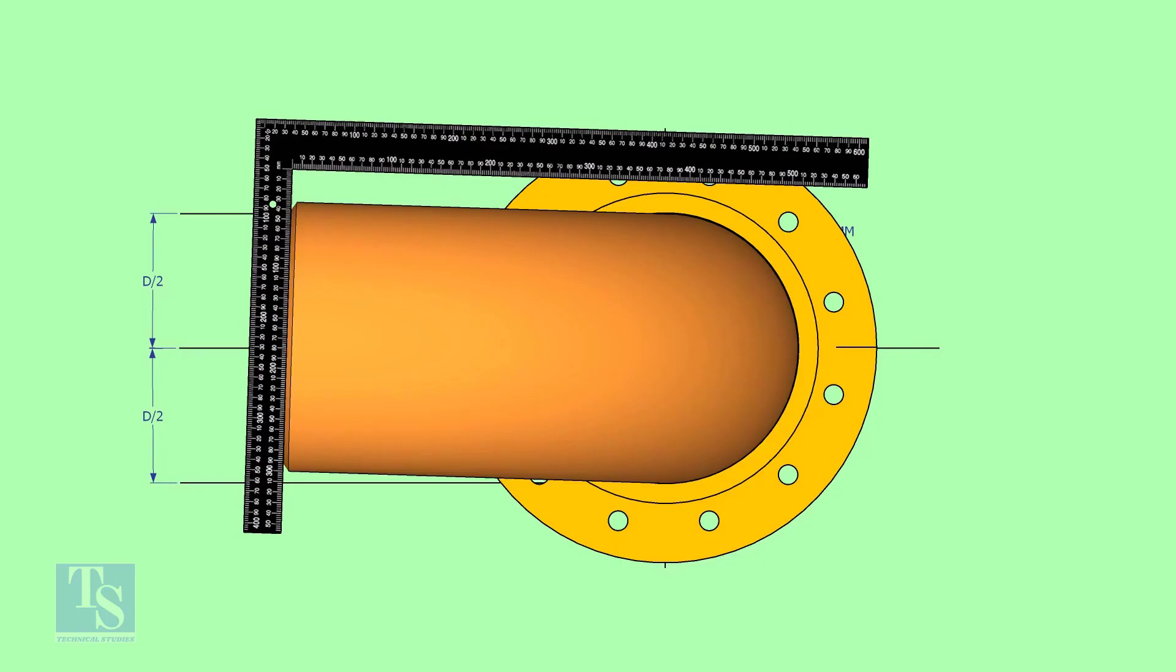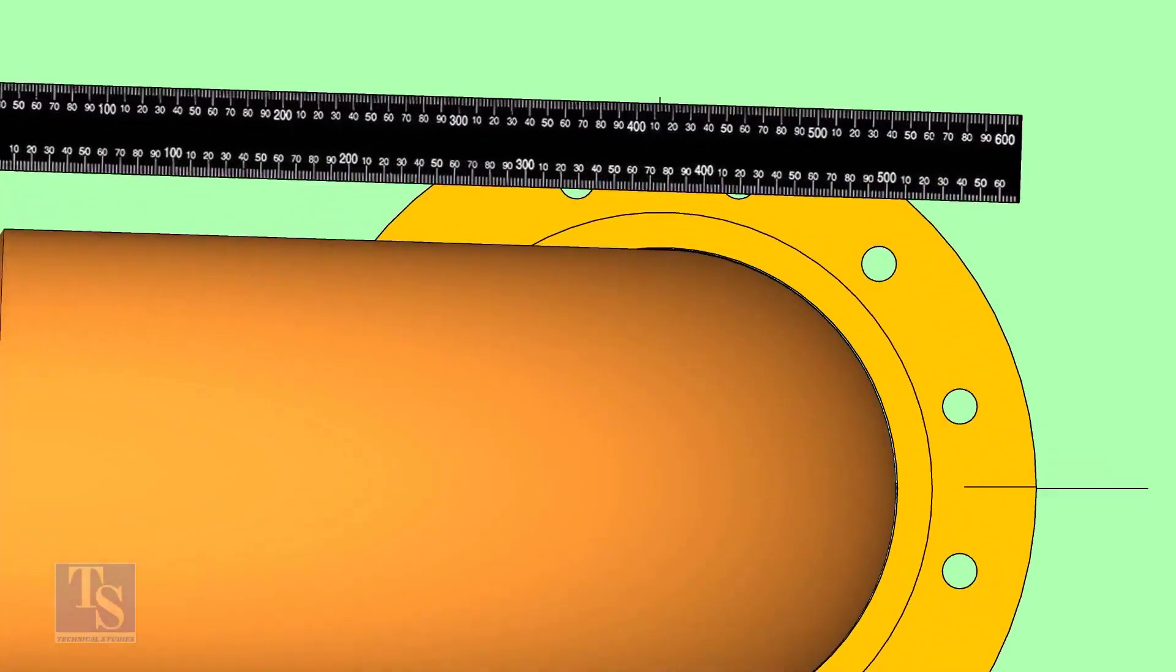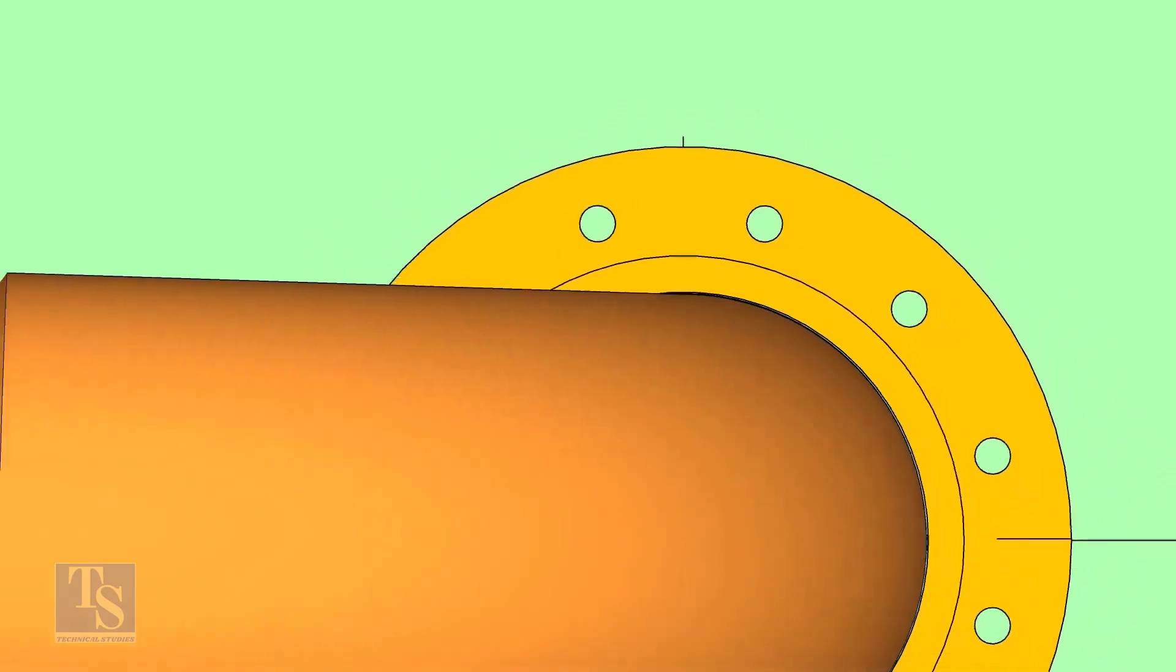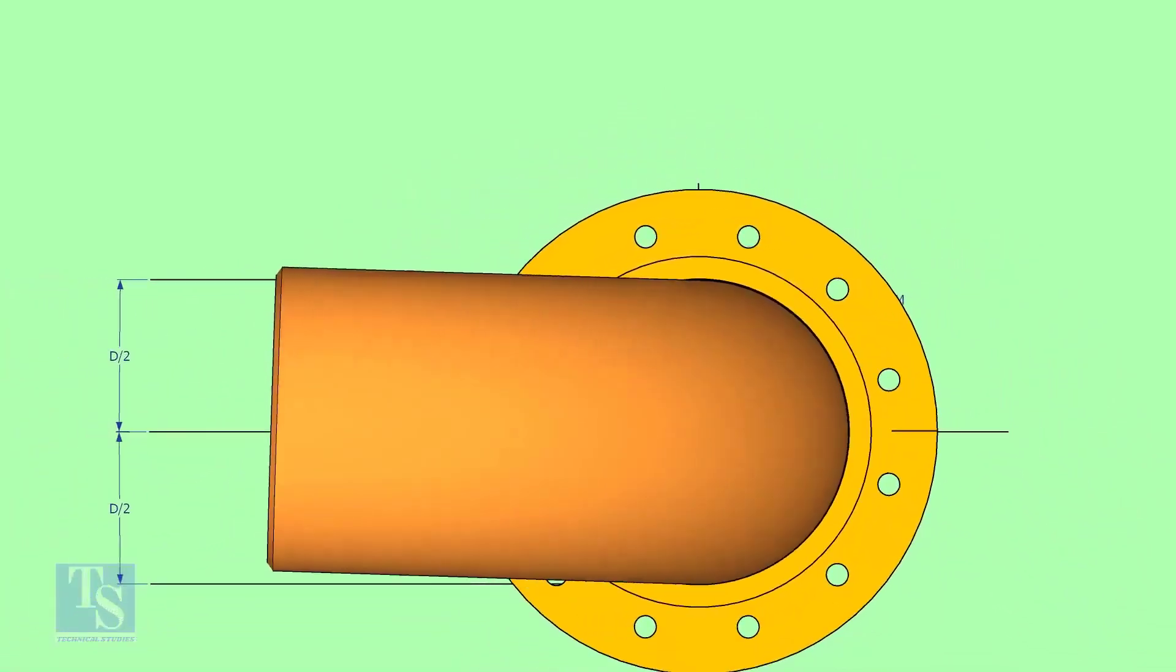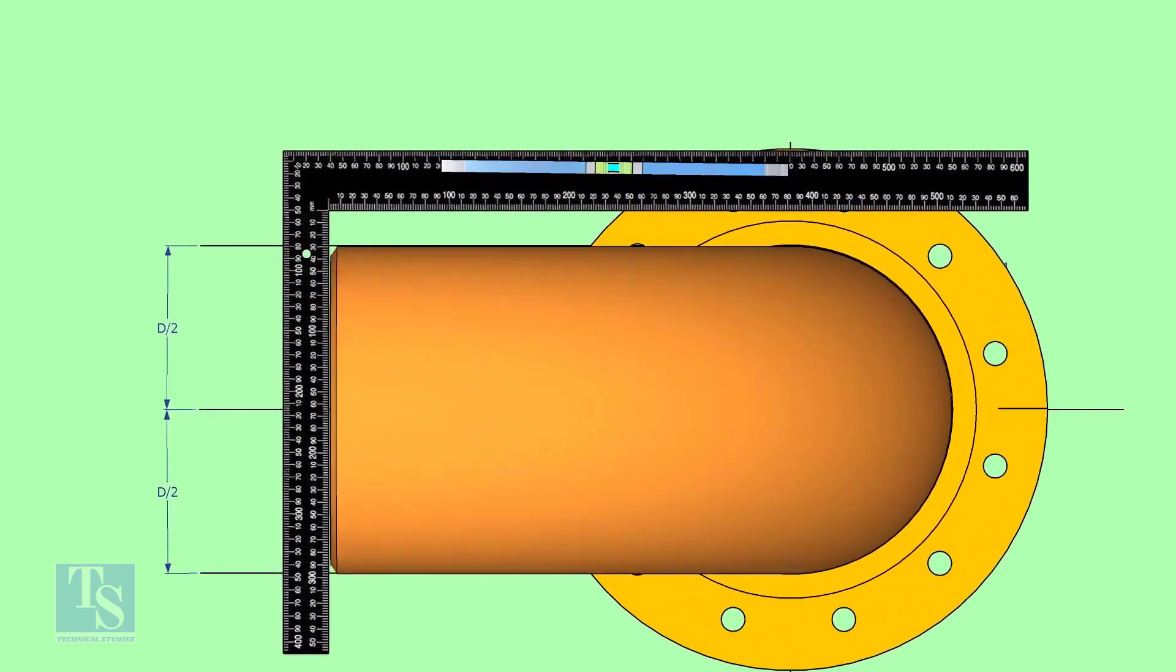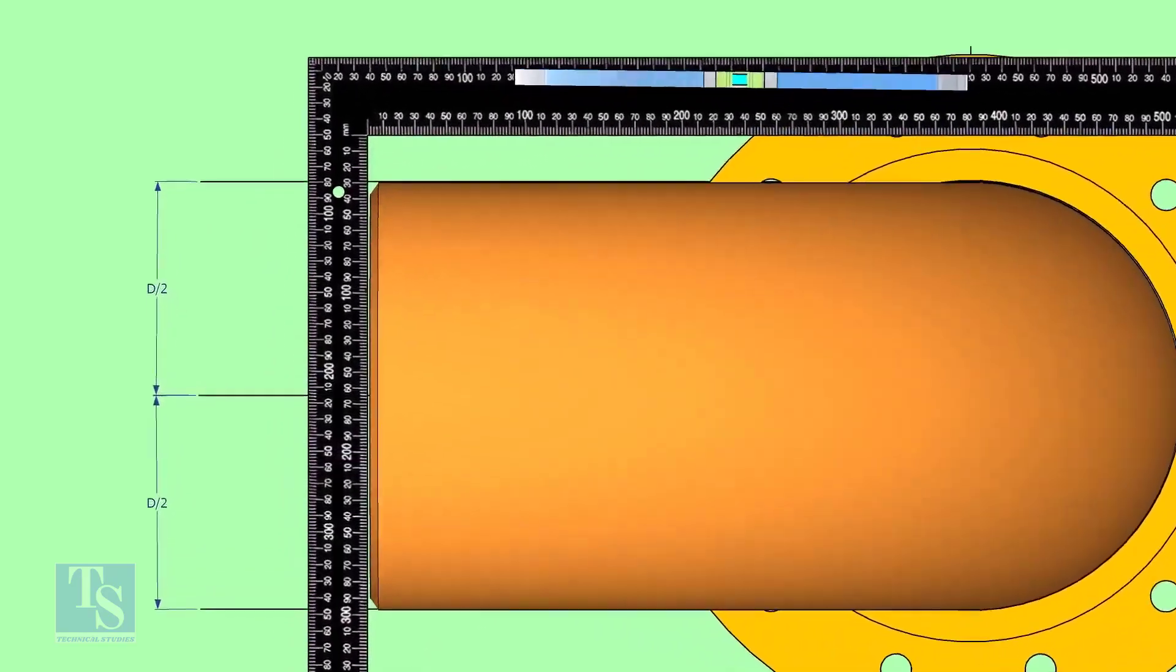Hold a right angle as shown and check if the reducer is turned. In this case, the elbow centerline is not parallel with the centerline of the flange. Rotate the elbow and correct the centerline.